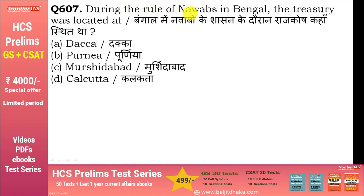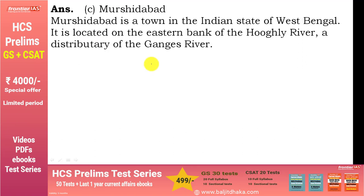During the rule of Nawabs in Bengal, the treasury was located at Murshidabad। यह West Bengal के अंदर है। Hooghly river जो Ganges की distributary है, उसके eastern bank पर Murshidabad town located है।